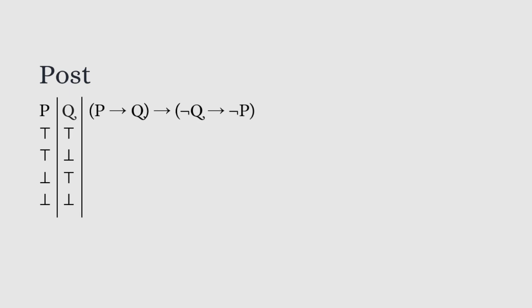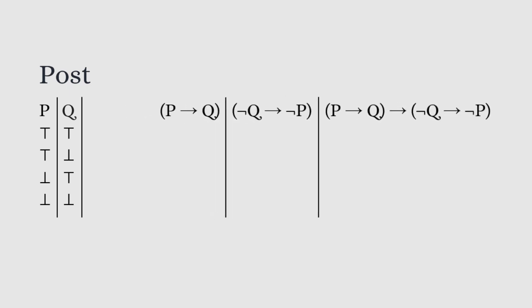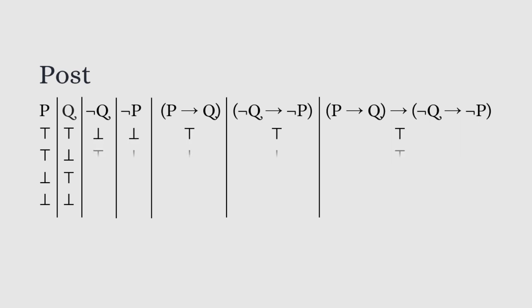Here are all the different possible combinations for two variables. Next, I look at the statement I want to prove. We'll need a column for it, as well as a column for the two smaller statements that it's built out of, and for the statements that they're built out of. And now I can go along row by row evaluating each column based on the information in the same row from the previous columns. Here's what we should get. And now you see that in every case our target statement was true. Therefore it is always true no matter what the values of p and q happen to be.